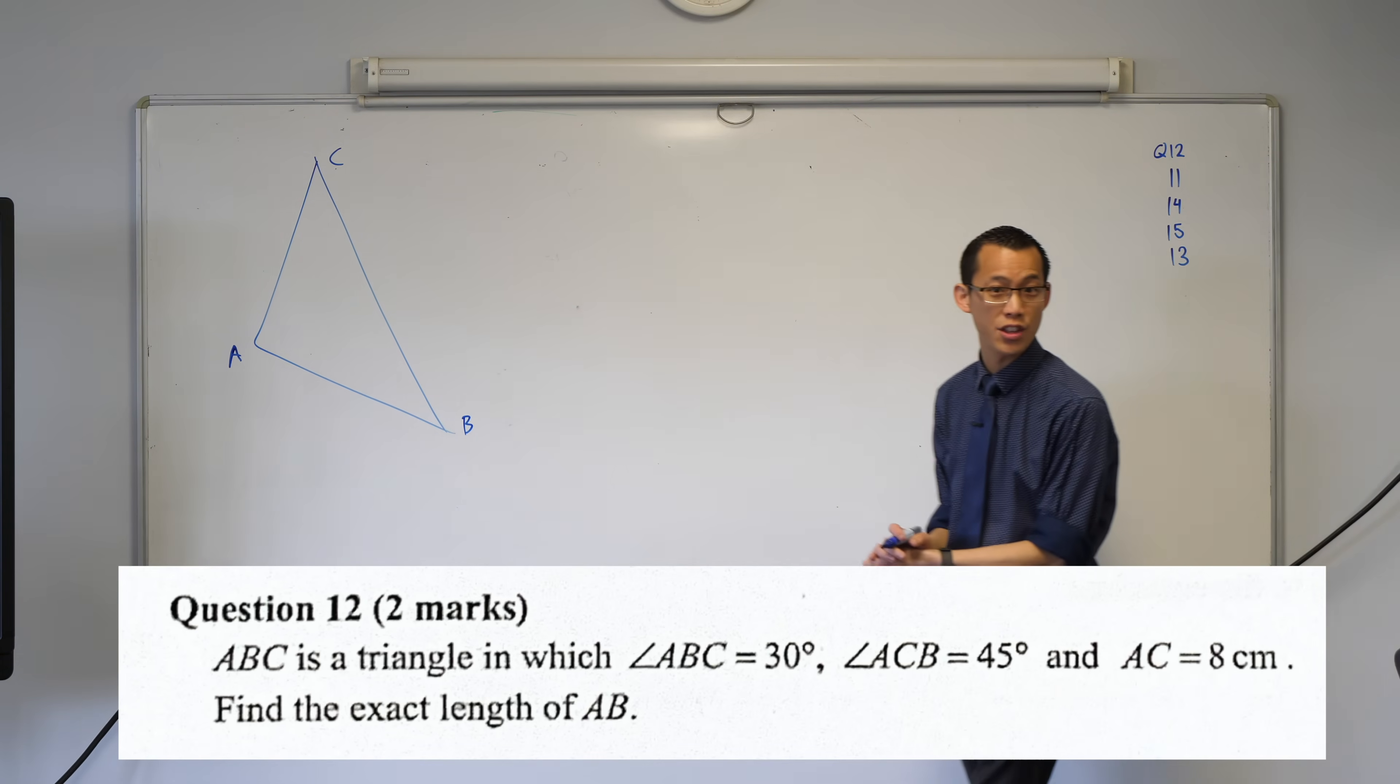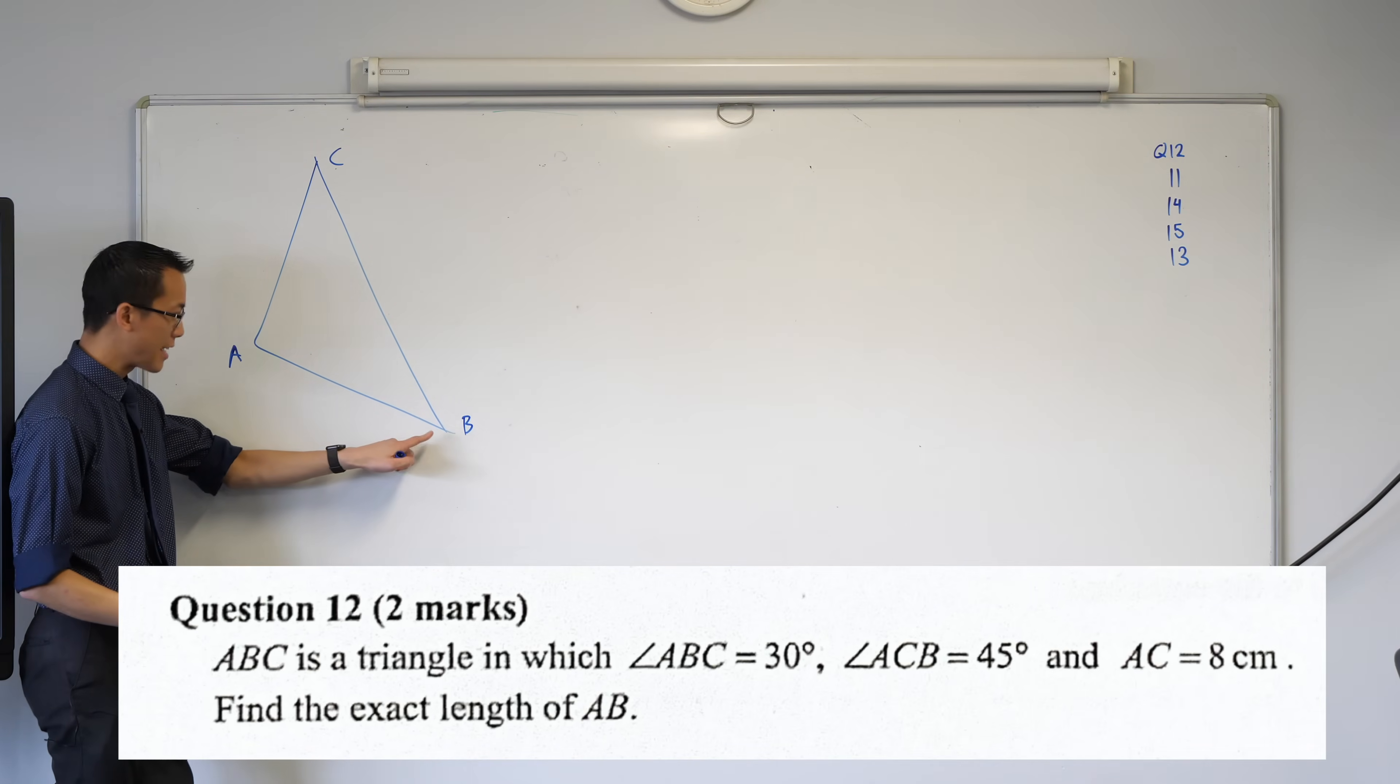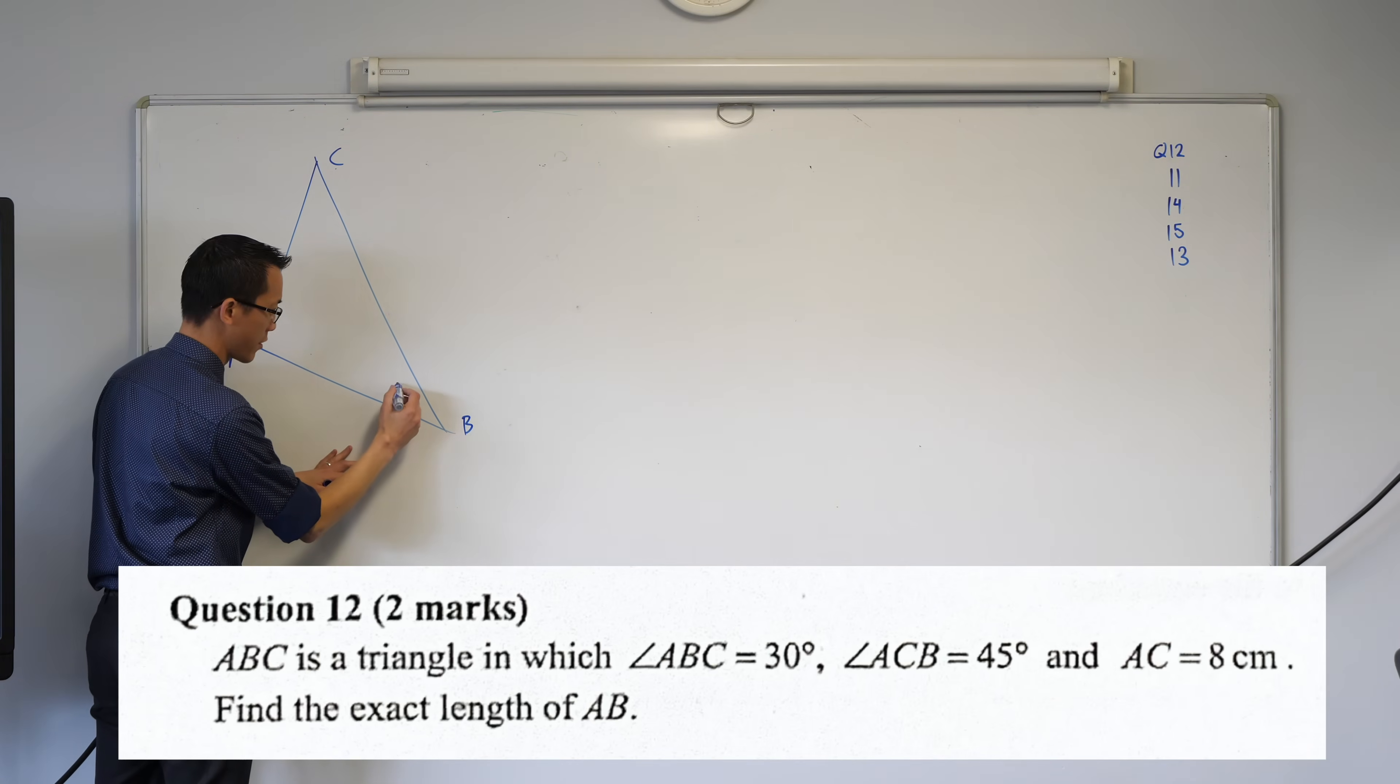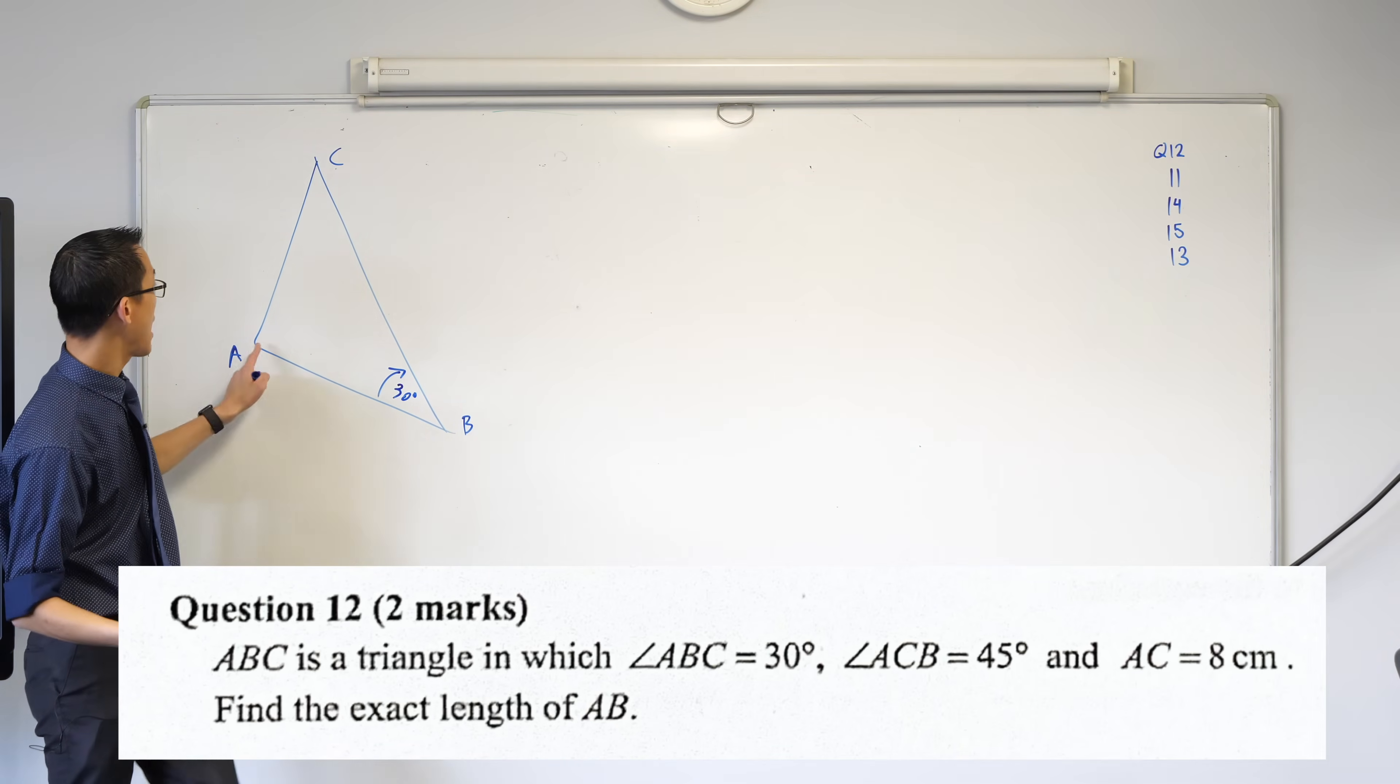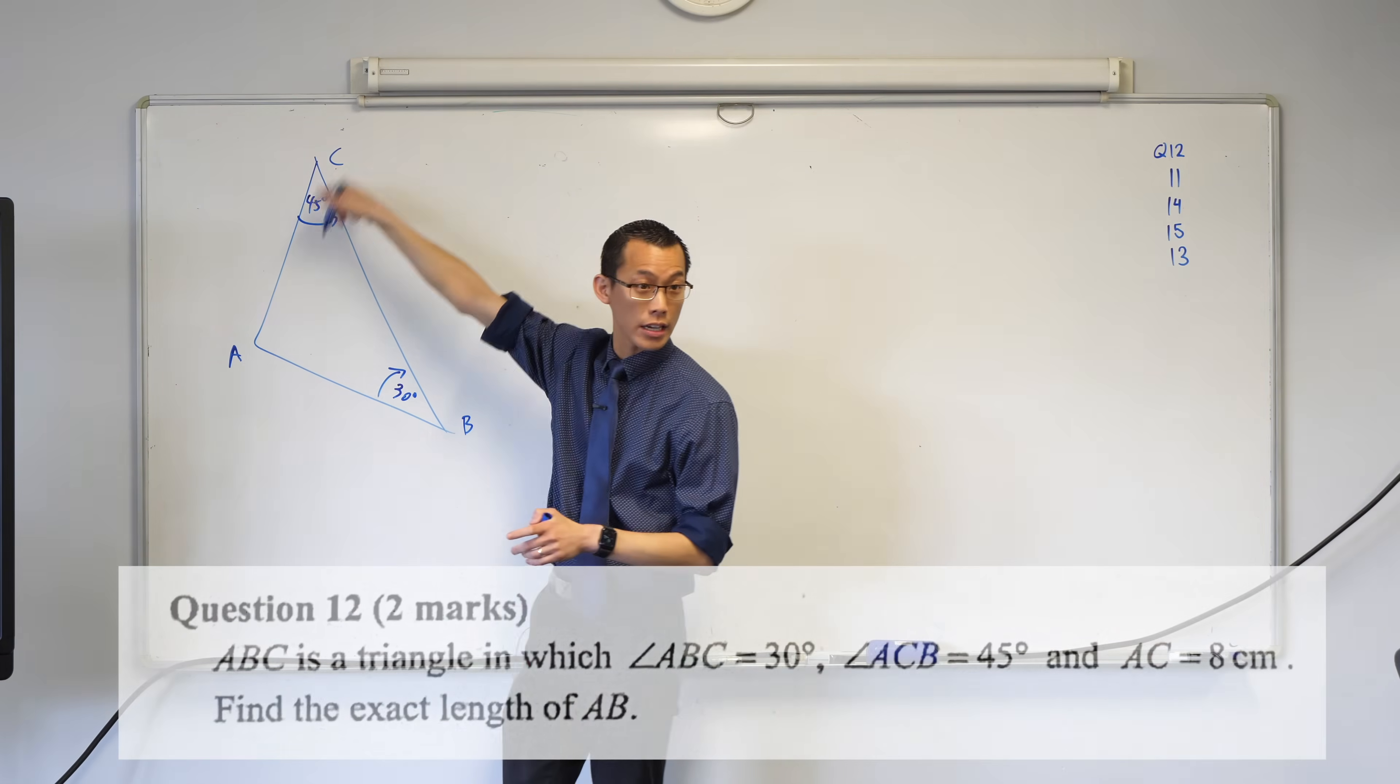So we get an angle—30 degrees. Where does it go on my diagram? ABC—that's the one at B. Remember, this is back to year 7, how we name angles. So 30 degrees, fantastic. The next angle they give us is 45. What's the name of that angle? ACB, so it's the one at the top. Let's pop that in as 45. Then they give us a length—8 centimeters. Where's that? AC, so that's this side on the left.